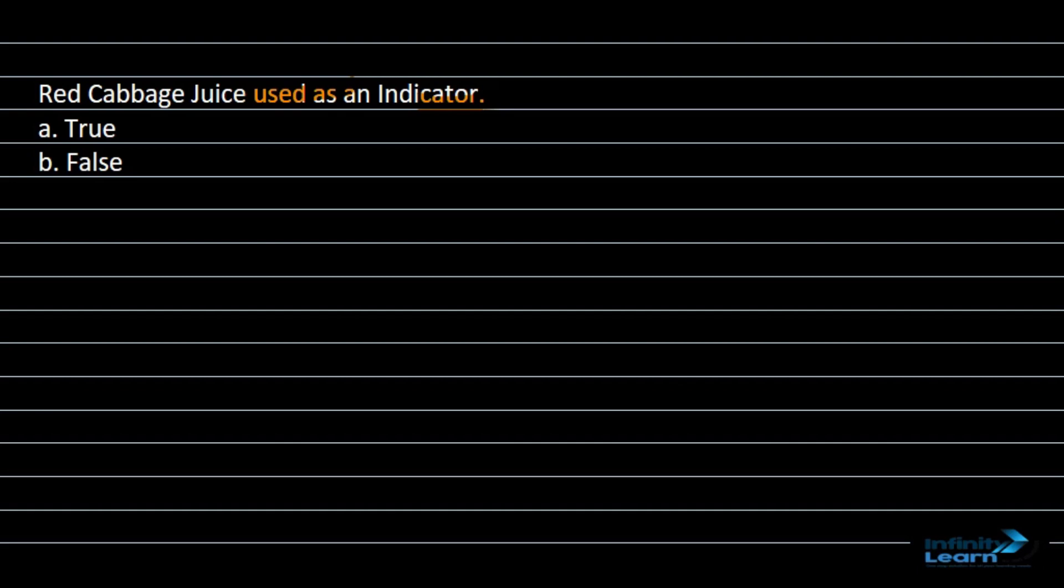So let me tell you, when we are talking about red cabbage juice, yes it is an indicator. Why is it an indicator and why is this statement correct? Indicators are basically substances which are used to know the nature of any given substance.